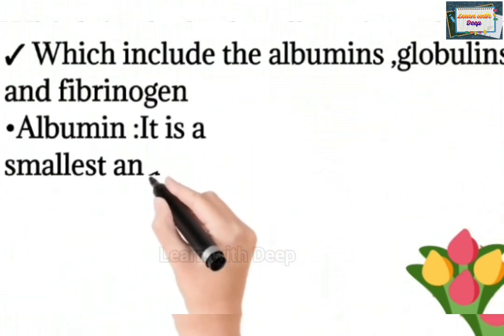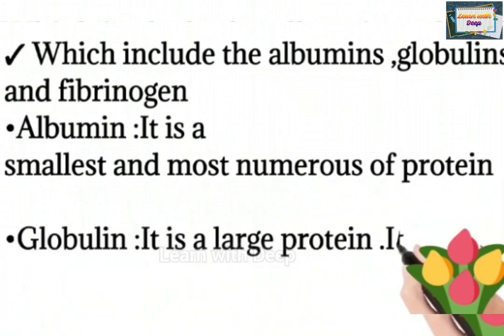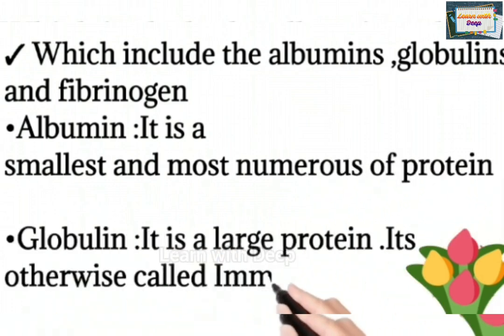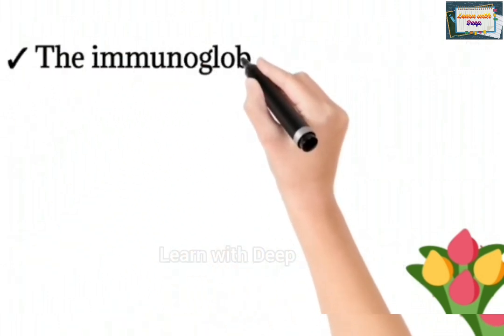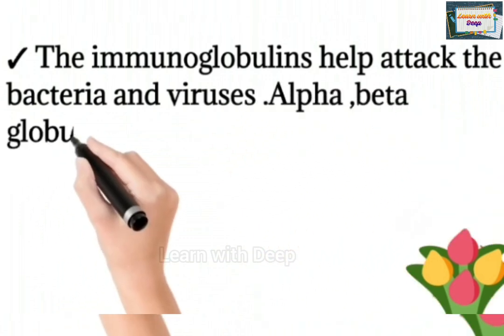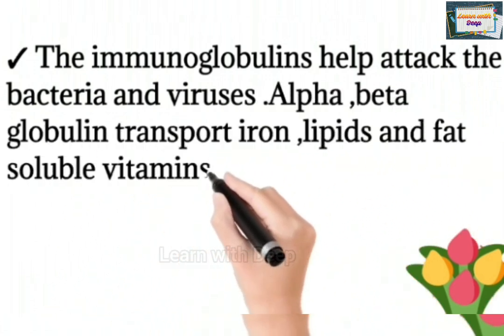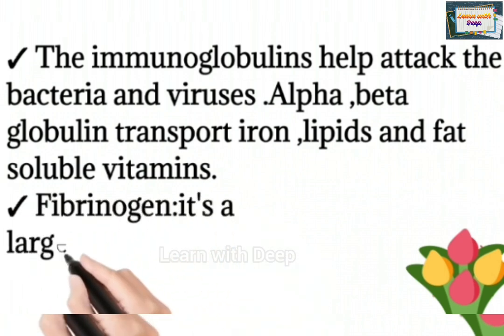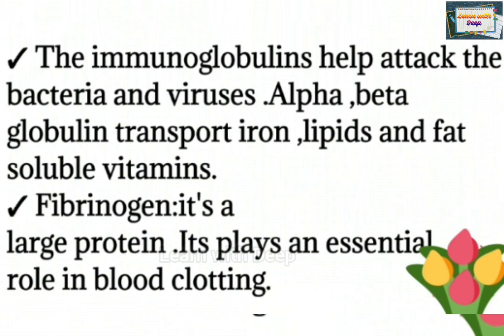Plasma proteins synthesized by hepatocytes include albumin, globulin, and fibrinogen. Albumin is the smallest and most numerous protein. Globulin is a large protein, also called immunoglobulin. Immunoglobulins help attack bacteria and viruses. Alpha and beta globulins transport ions, lipids, and fat-soluble vitamins. Fibrinogen is a large protein that plays an essential role in blood clotting.